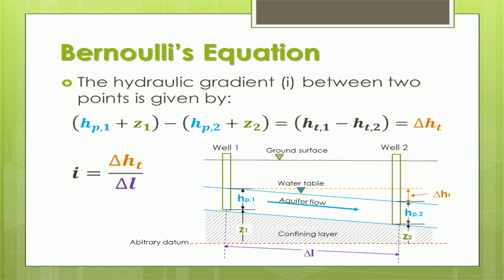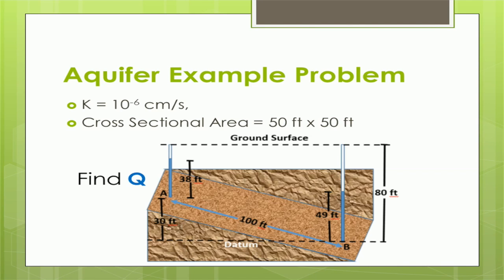In this drawing of an unconfined aquifer, the elevation is measured from an arbitrary datum below the aquifer to the lowest point in the well for both wells. The pressure head then extends to the water table. Length is measured in a perpendicular line to the aquifer as shown. We will now use these relationships to solve an example problem. For the aquifer in the image, find the flow rate, Q, of water from point A to point B. The cross-sectional area of the aquifer is 50 feet by 50 feet, and the perpendicular distance between wells is 100 feet.